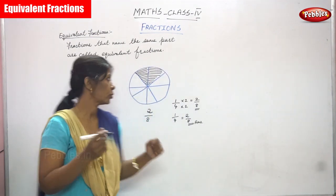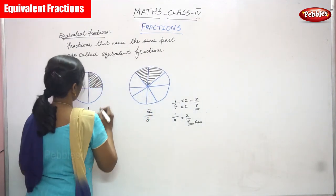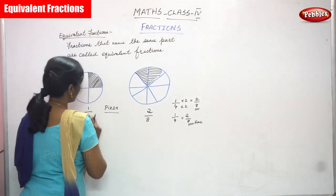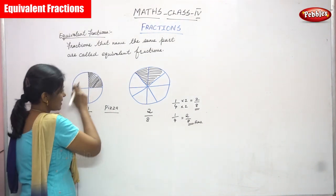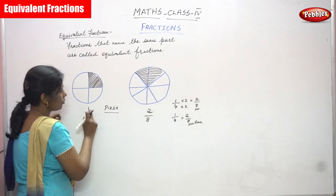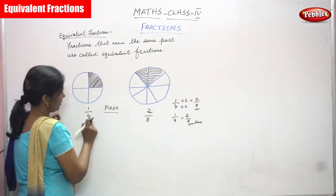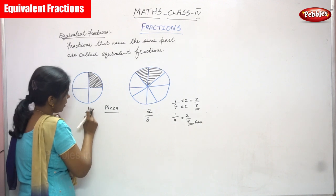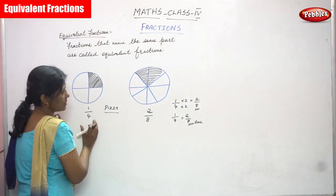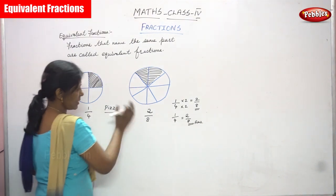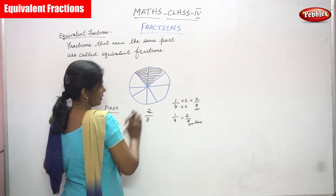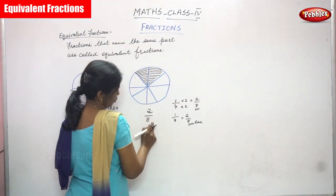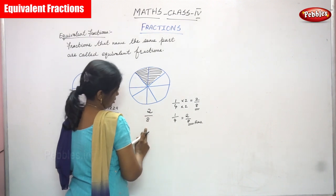This is a pizza. Both are pizza. This is a single pizza. We cut it into four equal parts but I shaded only one portion — that is one by four. Here, the same pizza I cut into eight equal parts, then I shaded only two portions. That is two by eight fraction.